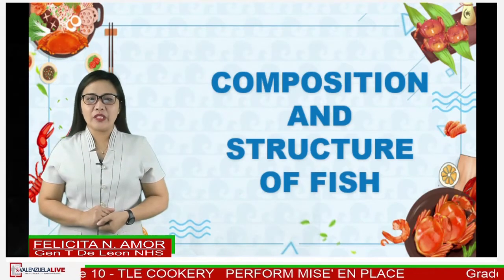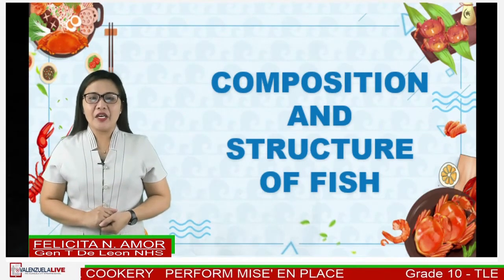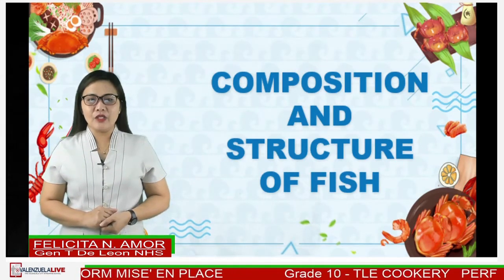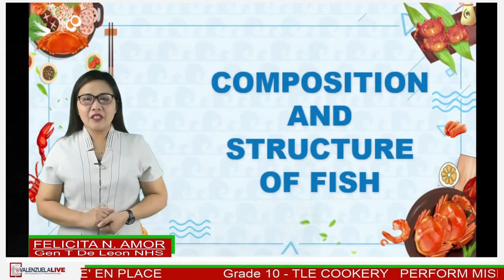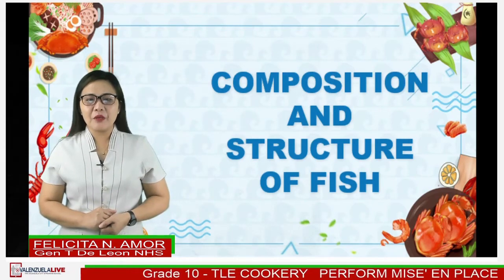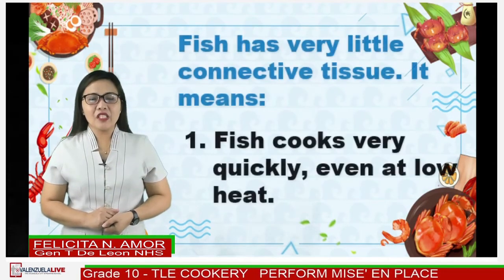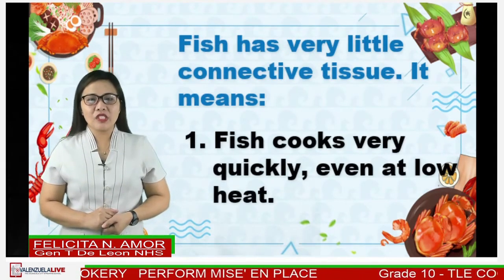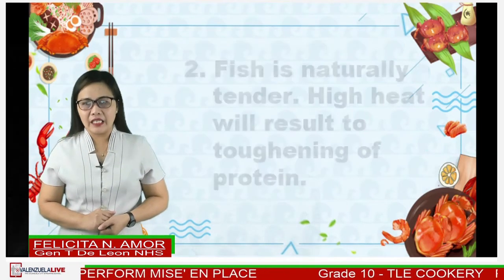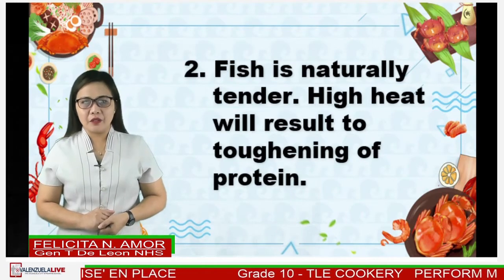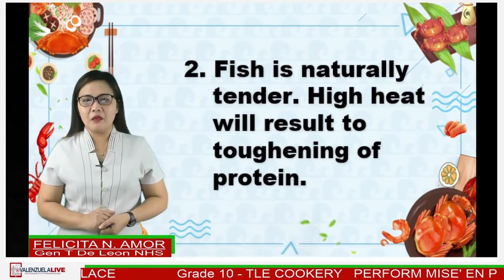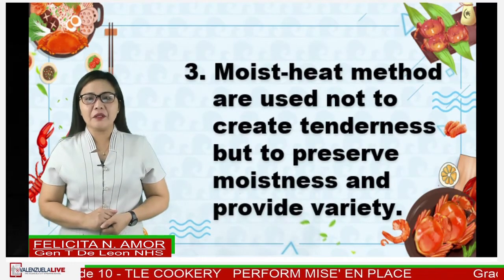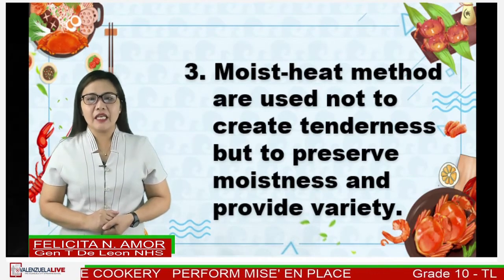Fish and shellfish contain high-quality protein and other essential nutrients and are an important part of a healthy diet. In fact, a well-balanced diet that includes a variety of fish and shellfish can contribute to heart health and aids in children's proper growth and development. Fish has very little connective tissue, which means: 1. Fish cooks very quickly, even at low heat. 2. Fish is naturally tender — high heat will result in thickening of protein. 3. Moist heat methods are used not to create tenderness, but to preserve moistness and provide variety.